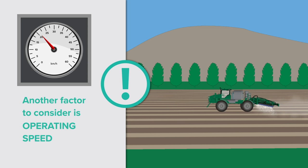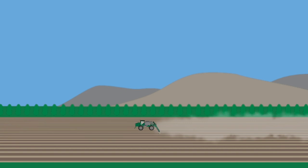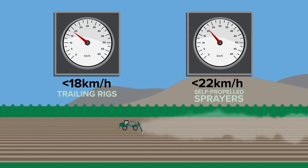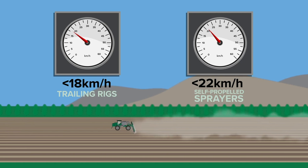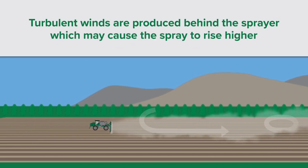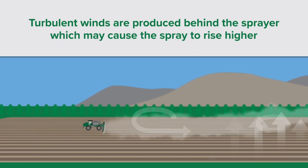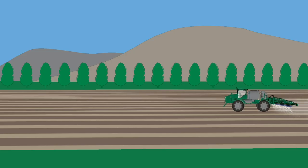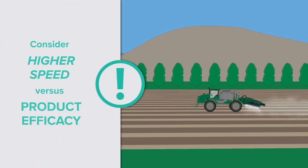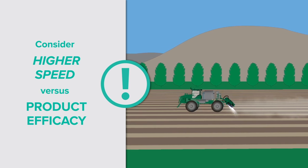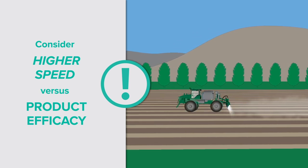Another factor to consider when spraying is operating speed. To minimise drift risk, keep your operating speed less than 18 km per hour with trailing rigs and 22 km per hour with self-propelled sprayers. This is because turbulent winds are produced behind the machine which may cause the spray to rise higher than the boom, resulting in an increase in spray drift distance. While it's important to maintain operational efficiency, it's also important to consider the trade-off between higher speed and the negative impacts on product efficacy due to reduced coverage and the potential for spray drift.